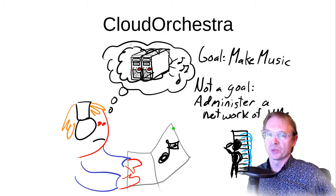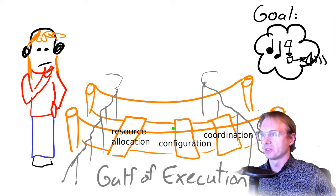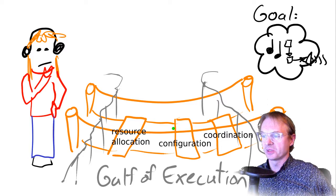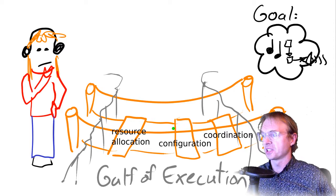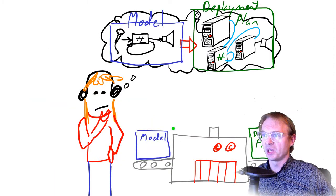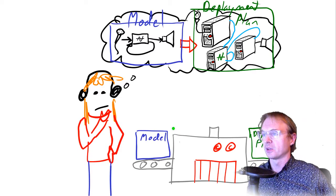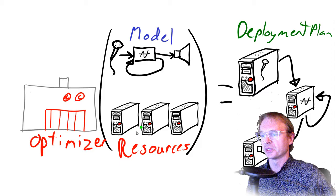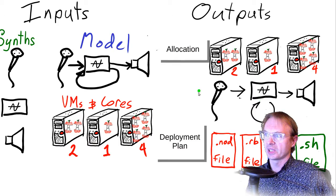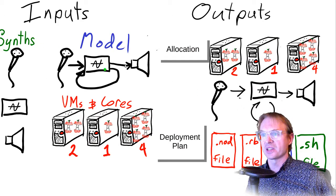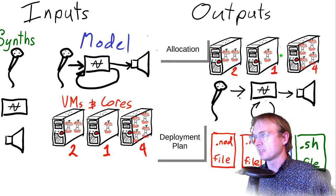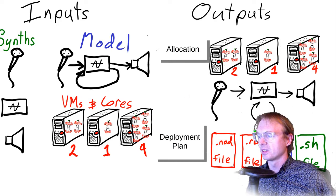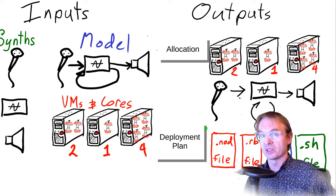My goal was to make music and not to administer a bunch of computers. Unfortunately, a musician using the cloud would face a gulf of execution — having to deal with resource allocation, configuration, and coordination — when really you just had a model of what you wanted to play. What you could do is put your model and your resources into an optimizer, and it could decide what to deploy into the cloud. We took a definition of synthesizers hooked up together, the available cloud resources, told it to optimize, and it allocates everything to different cloud machines and makes scripts to deploy and run the thing.